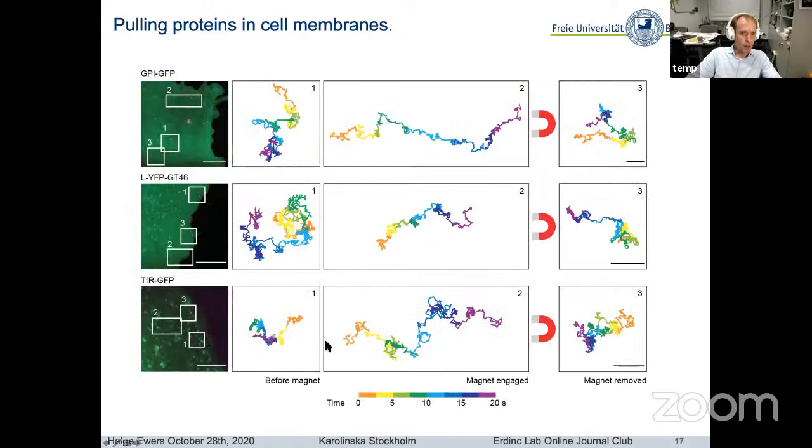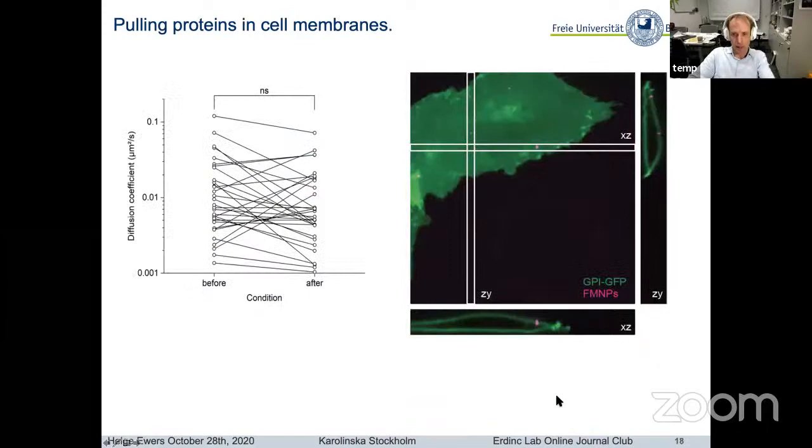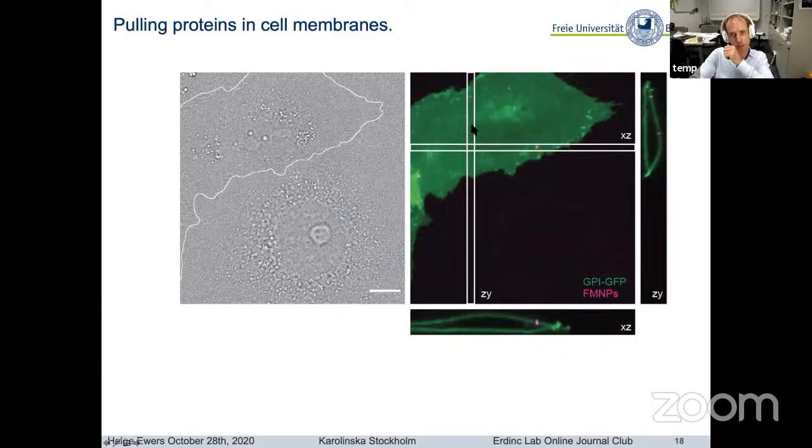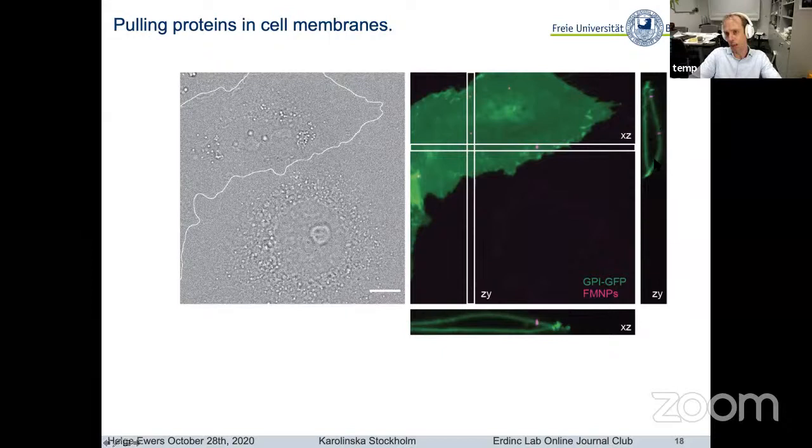No matter what protein we used, all of them—GPI-GFP, LYFP-CD46, or transferrin receptor GFP—they would exhibit random motion before we tracked them. When we approached the sample with a magnet, they would move into the direction of the magnet, and then when we removed the magnet, they would resume random motion in the plane of the membrane. We could show that this was specific binding. Here you can see this is a transfected cell, this is a neighboring untransfected cell. You can see that these particles only bind to the transfected cell. Using confocal microscopy, we can see that they are nicely on top of the cell, and don't bind to the coverslip or anything.